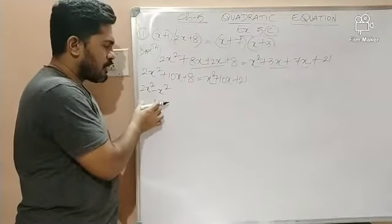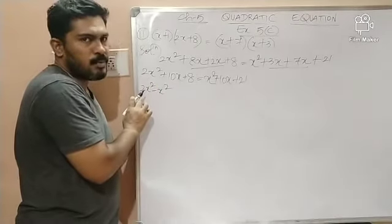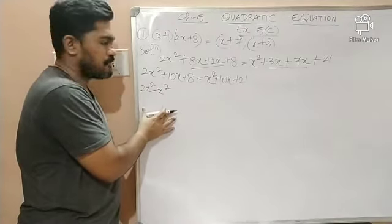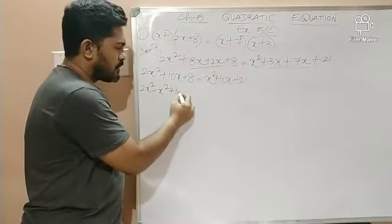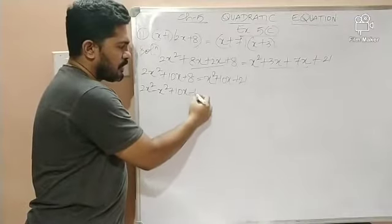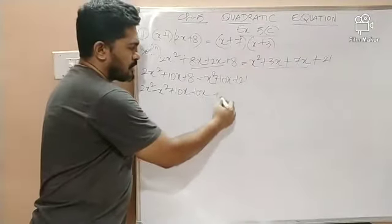So here it is 2x². When I bring this x², I will pair it with whom? 2x². Hence, I can write it as 2x²-x². Now, plus 10x. When I bring this 10x to the left hand side, it becomes minus 10x plus 8.